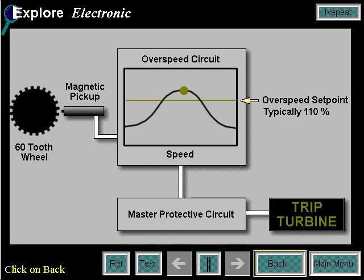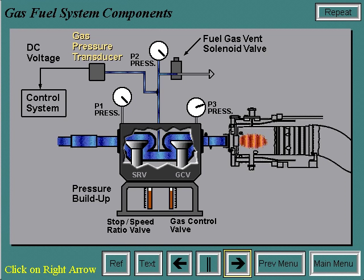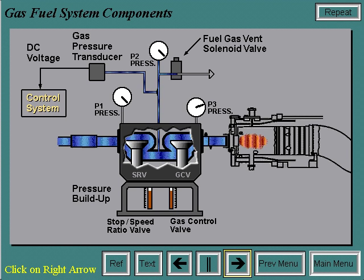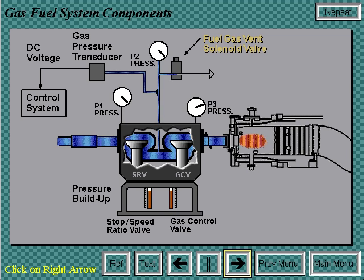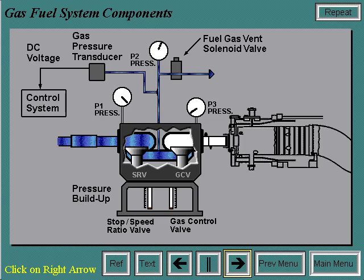An electrical overspeed trip message will be displayed. The fuel gas pressure transducer has a DC voltage output directly proportional to pressure input in PSIG. This transducer provides the control system with a feedback signal for the operational fuel gas pressure, or P2 pressure, between the stop speed ratio and gas control valves. The fuel gas vent solenoid valve vents the volume between the stop speed ratio valve and the gas control valve when the solenoid is de-energized. This valve is closed during operation; when open, it ensures that during shutdown, fuel gas pressure will not build up and no fuel gas will leak past the closed gas control valve.